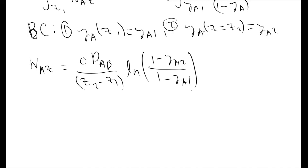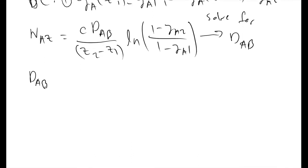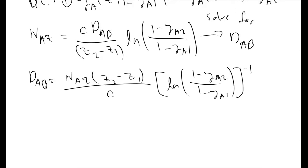If we now rearrange this equation and solve for DAB, what we end up with is DAB equals the flux of A in the Z direction times the height of the fluid in your Arnold cell divided by the total concentration and then times the quantity natural log of 1 minus YA2 over 1 minus YA1 inverse. At this point you have now successfully evaluated what your diffusion constant should be.